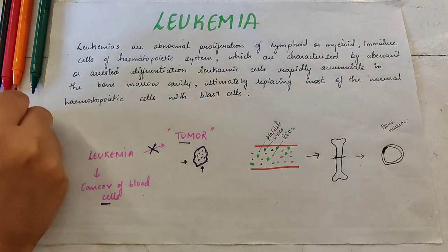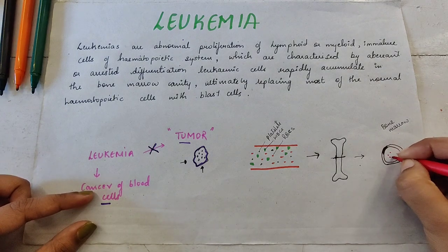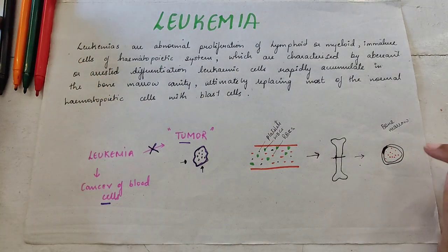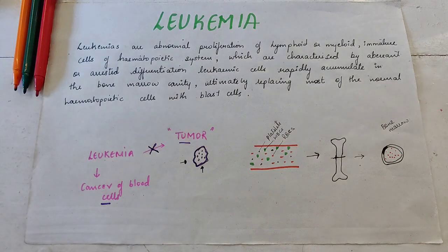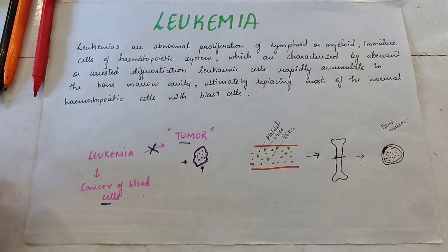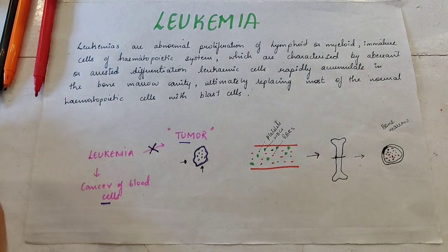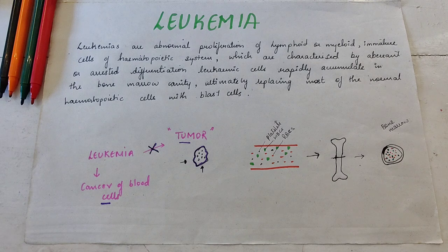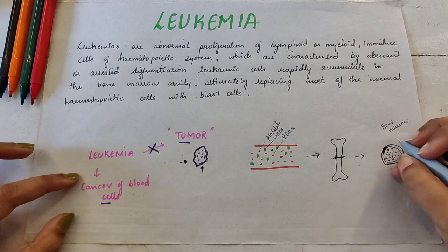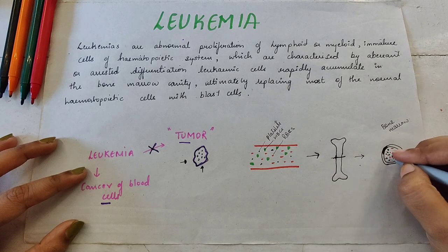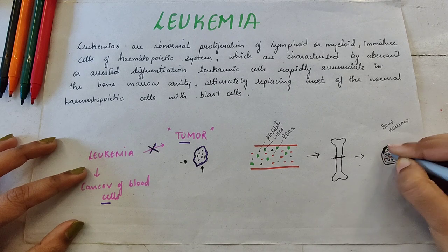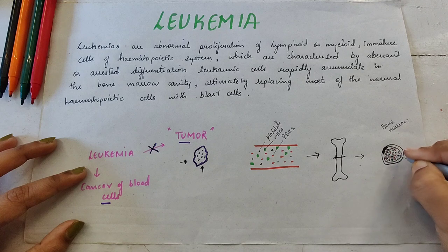Here you can see the red blood cells in their production stage from the hematopoietic stem cell — RBCs, few platelets, and WBCs. Now, what happens is in the developmental stage there is some problem because of which it starts producing a certain kind of cell in its immature stage, and it starts growing and multiplying so rapidly that it starts accumulating in the bone marrow.